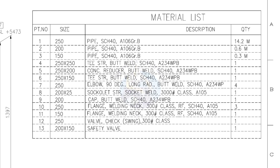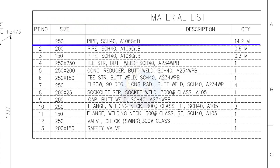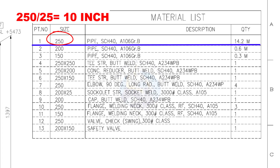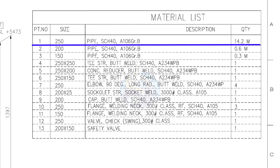Let us start with the material list. Part number 1: pipe nominal size is 250. If you want to convert this into inches, divide it by 25 and you will get the nominal pipe size in inches. What is the nominal pipe size of this 250 NB pipe in inches? Divide 250 by 25. The answer is 10 inches. Another example: what is the inch size of the 200 NB pipe? Divide 200 by 25. The answer is 8 inches.